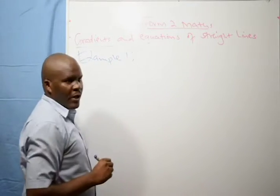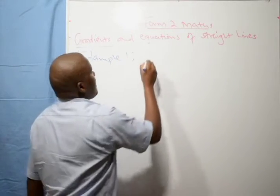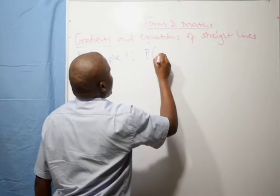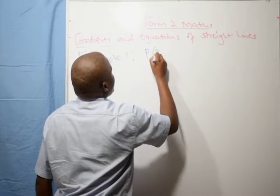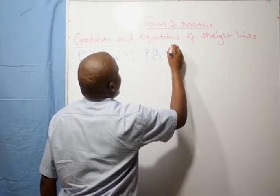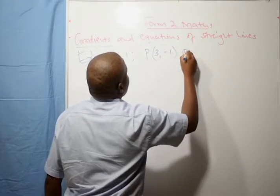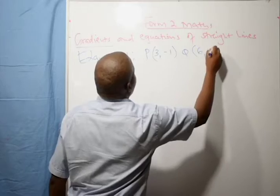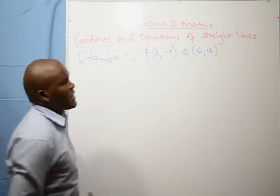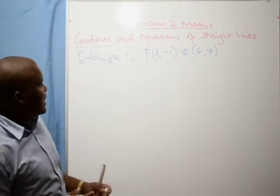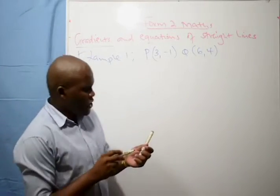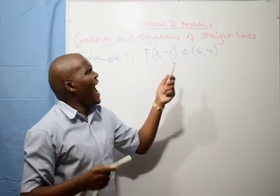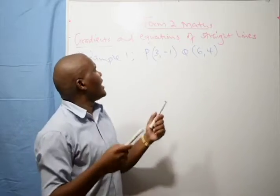We have a line PQ which is passing through point (3, -1) and (6, 4). That is a straight line. So when you are given two points, how do you find the gradient or slope of that line?